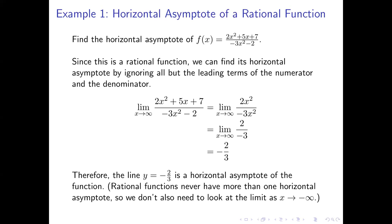We've only looked at the limit as x approaches positive infinity here. You might ask what about negative infinity? When dealing with a rational function like this, we never have more than one horizontal asymptote — that's a principle about rational functions. So we don't need to worry about the limit as x approaches negative infinity; we'll get the same thing. It can sometimes happen that you get different behavior in each direction, and in those cases the best way is to look at the graph.